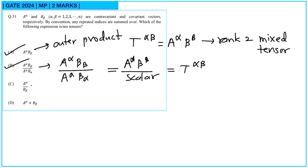For option C, A^α divided by B_β: tensors do not transform correctly under division, so this is not a valid tensor. For option D, covariant and contravariant tensors cannot be added. So option D is wrong. Therefore options A and B are correct.